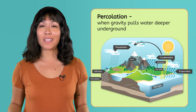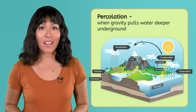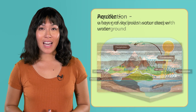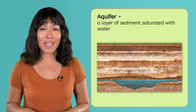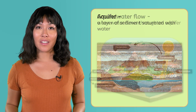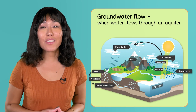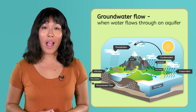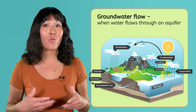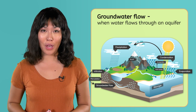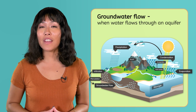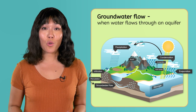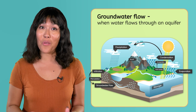Water percolates through layers of soil and rock until it eventually reaches an aquifer. An aquifer is a layer of sediment saturated with water. Water can easily flow through gaps in this sediment, which keeps it moving underground in a process called groundwater flow. Aquifers often feed into rivers and lakes, which returns the water to storage and starts the cycle over again.